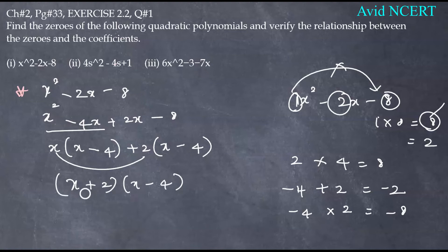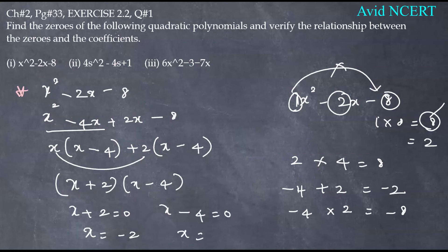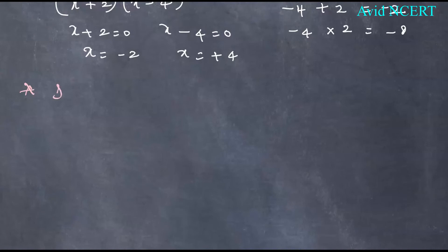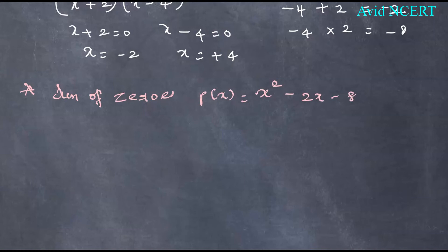Setting each factor to zero: x plus 2 equals 0 gives x equals minus 2, and x minus 4 equals 0 gives x equals plus 4. We have now found the zeros. The next step is to verify the relationship between the zeros and the coefficients.